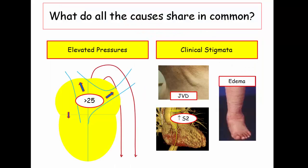So what do all these causes of pulmonary hypertension share in common? Elevated pulmonary artery pressures, for sure, and the clinical stigmata of those elevated pressures, which include the presence of JVD, peripheral swelling, and accentuation of S2—that is, the pulmonic component of the second heart sound. Heart sounds will be covered in detail in the cardiology section, but we'll cover them further as we move along with this lecture.